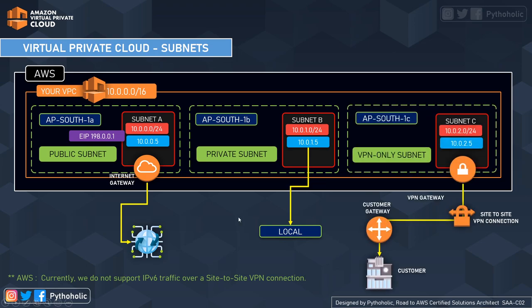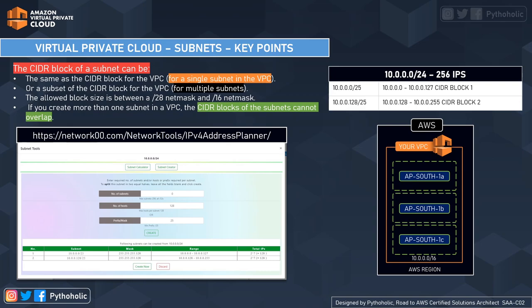The third type is the VPN-only subnet. If the subnet does not have any routing through the internet gateway but instead has a route to a virtual private gateway for a site-to-site VPN connection, the subnet is known as a VPN-only subnet. With this you can enable access to your remote network from your VPC by creating an AWS site-to-site VPN connection and configuring routing to pass traffic through that connection.